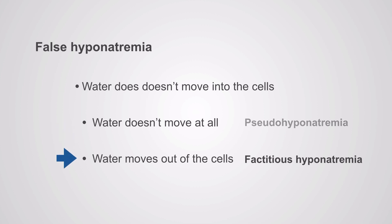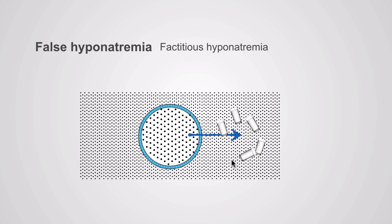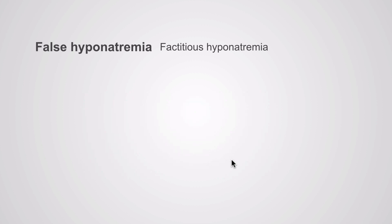The other form is called factitious hyponatremia. Here, instead of water moving into the cells like we'd expect with hyponatremia, water is actually moving out of the cells. The extracellular environment is hypertonic compared to the intracellular concentration, drawing water osmotically out of the cells. This water then dilutes the serum sodium, causing the low reading. The low sodium is real — it's not a measurement error — but it doesn't carry the same implications as true hyponatremia because the water is moving out of the cells rather than into them.